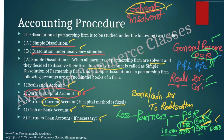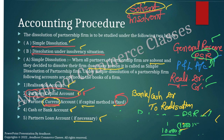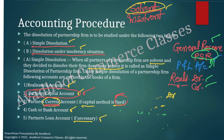This covers the realization account, cash and bank account, and partner's capital account. If the problem gives a fixed capital method, then you open a current account additionally. The accounts to open are: first, realization account; second, partner's capital account; third, partner's current account; and lastly, cash or bank account.